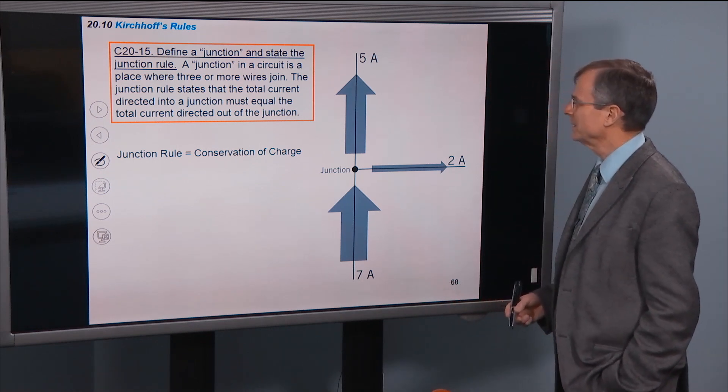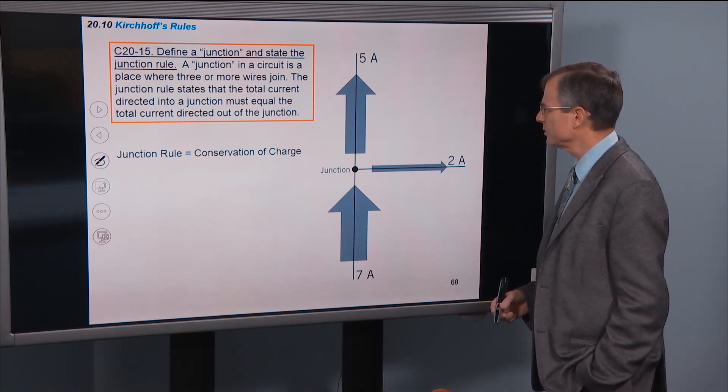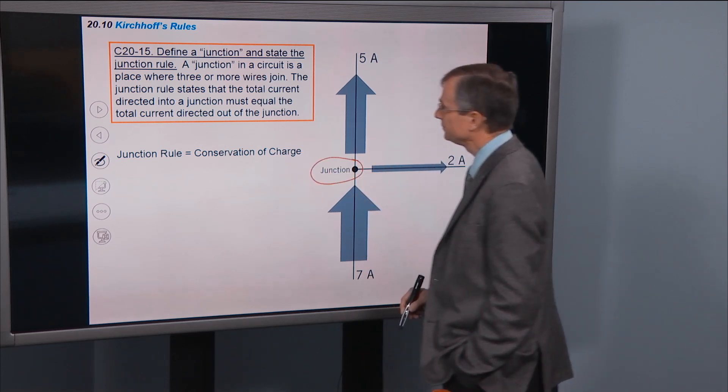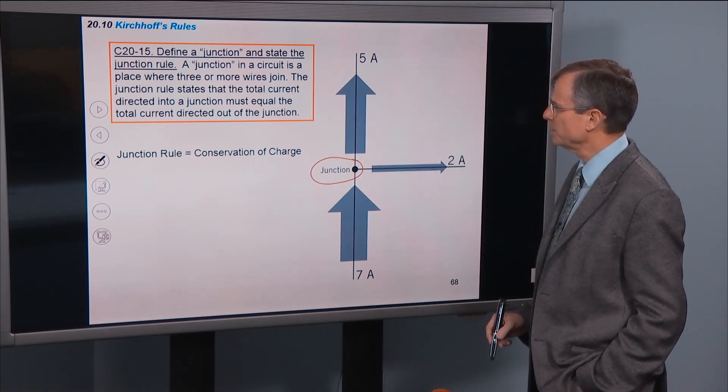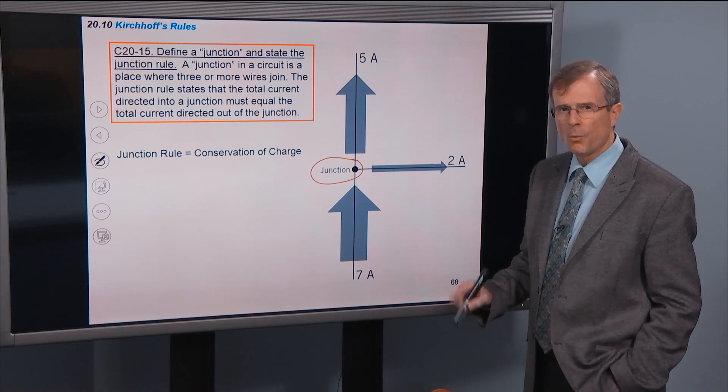Define a junction and state the junction rule. What's a junction? Here's an example of junction. A junction is a place where three or more wires join.